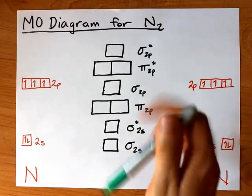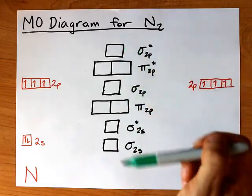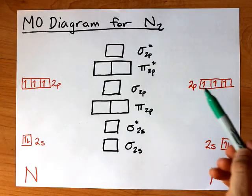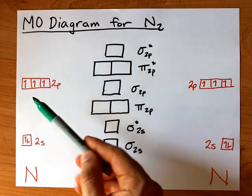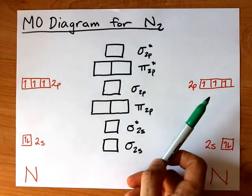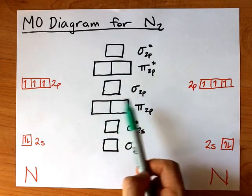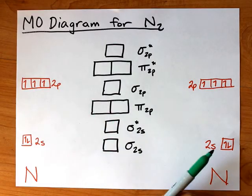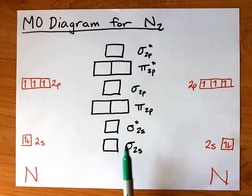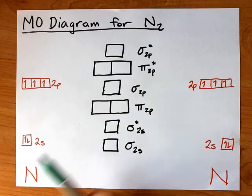Alright, but this is nitrogen. You don't have to worry about that. This is the ordering. These three 2p atomic orbitals and these three 2p atomic orbitals combine to create these six molecular orbitals, and then these 2s atomic orbitals combine to make these molecular orbitals as well.